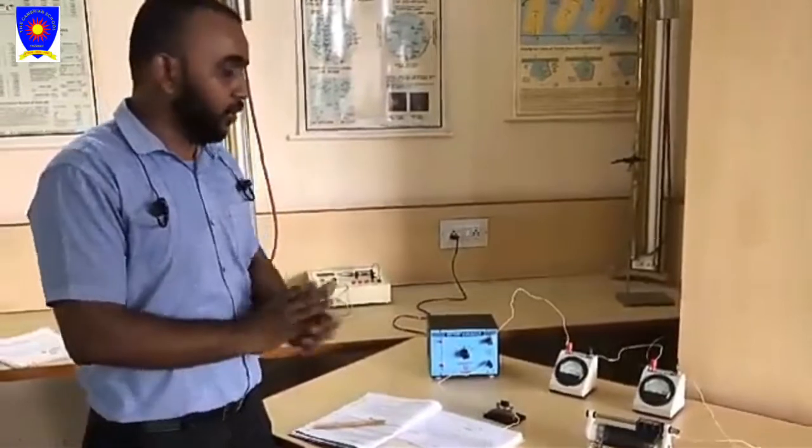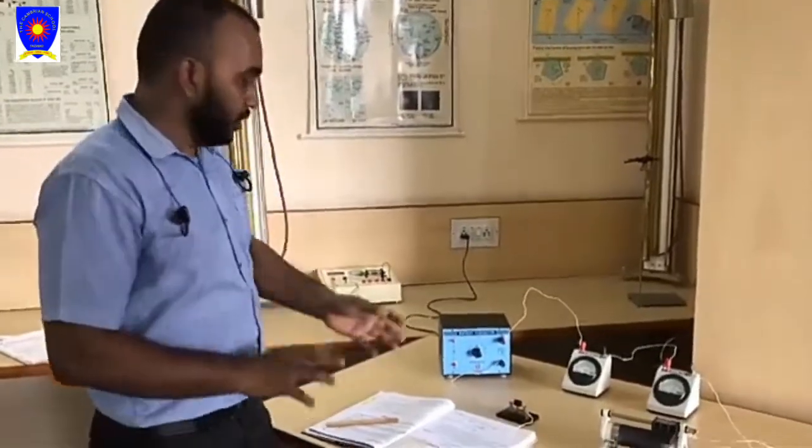According to this law, V is equal to RI, or we can write R is equal to V upon I, where R is a resistance or a constant known as electrical resistance of the conductor. This is our theory and we have to perform it.